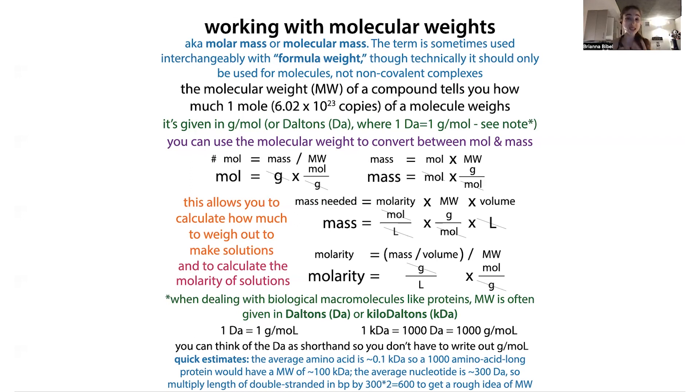So we need to multiply that 300 by 2, so 600. So a base pair is about 600 daltons. So if you know the length in terms of base pairs, you can multiply that by 600 to get a rough idea of the molecular weight in terms of daltons that you probably then would want to convert to kilodaltons, which you could easily do by just dividing by 1,000.